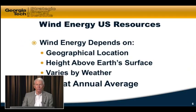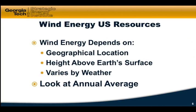The average wind speed increases with height above the Earth's surface — whether water or land. It also varies with geographical location. Some areas just meteorologically have a higher average wind speed, which is what we want for high energy density and lots of resources versus other geographical locations. Height above the surface turns out to be very important, as we'll see.